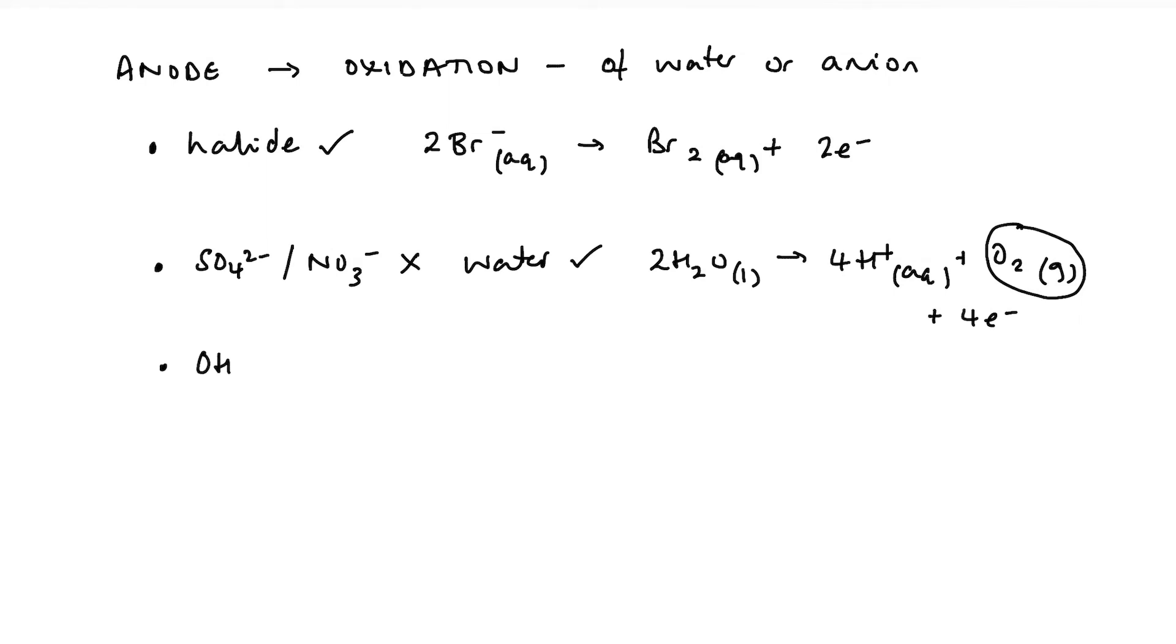And if the salt is a hydroxide, then it's the hydroxide ion that is oxidized. So hydroxide ions, losing electrons to form oxygen gas, and water. So here we would have a product of oxygen at the anode.